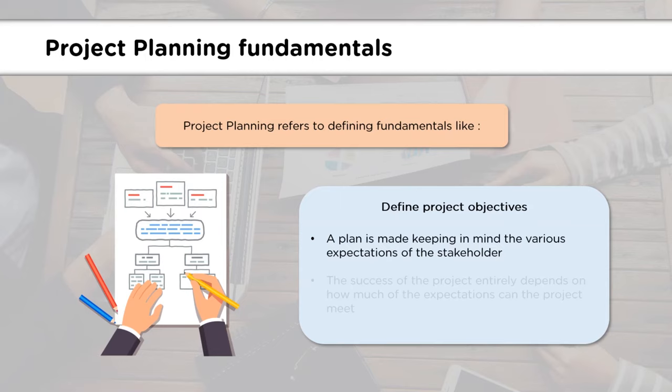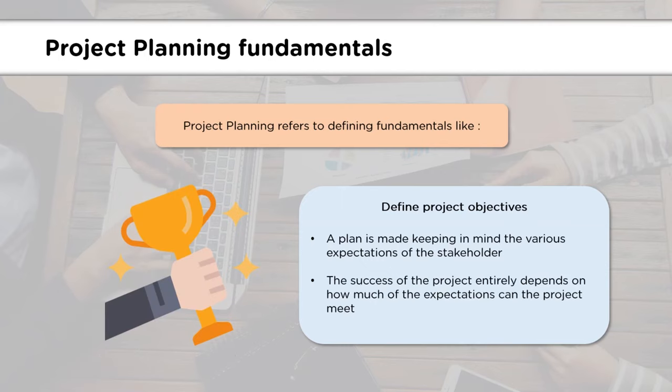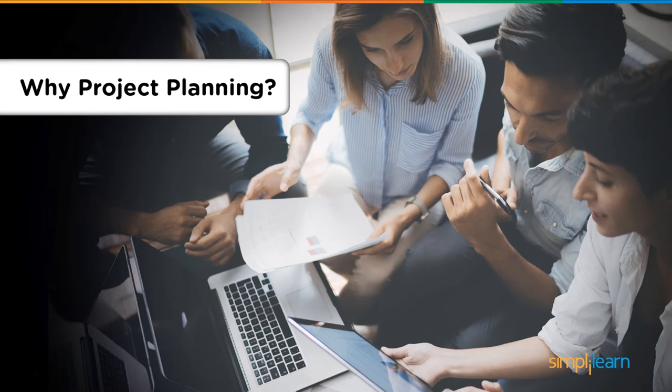The last fundamental we will discuss is defining project objectives. A project plan is made keeping in mind the requirements of the project team and expectations of the stakeholders. If the project team can meet the expectations of the stakeholders, then only can we say that the project is successful. Now that we know about project planning and its fundamentals, it's time to see why project planning is so important.